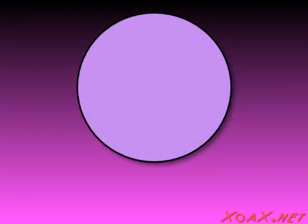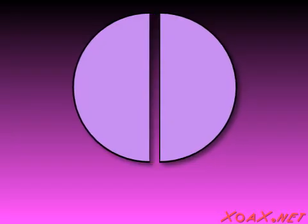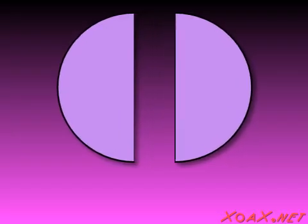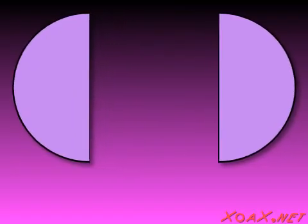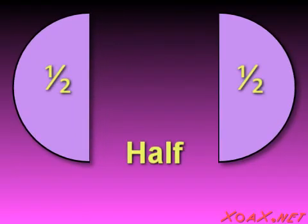We can split a circle into two equal semicircles by cutting it through the middle. Once we do this, we have two separate and equal regions, each of which is half the size of the original circle.